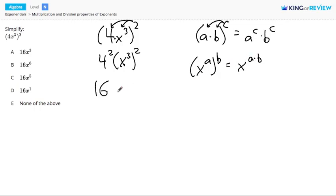So in our problem, this becomes x to the 3 times 2 power. We can simplify that pretty quickly. 3 times 2 gives us 6, so our simplified answer is 16 times x to the sixth, or answer choice b. Thanks for watching!